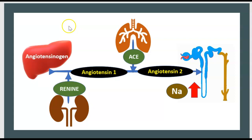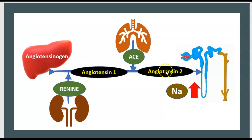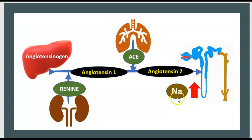To understand the metabolism of aldosterone, start from the liver and the kidney. From the liver comes angiotensinogen. Angiotensinogen gives angiotensin I by the action of renin coming from the kidney. Angiotensin I gives angiotensin II by ACE coming from the lung. Angiotensin II acts on the nephron, leading to increased sodium absorption.